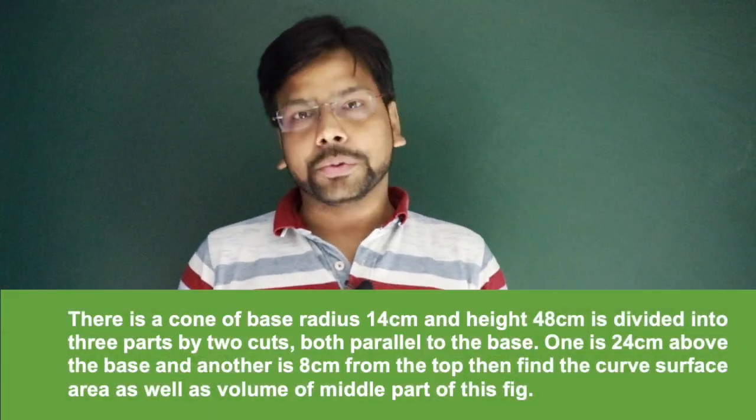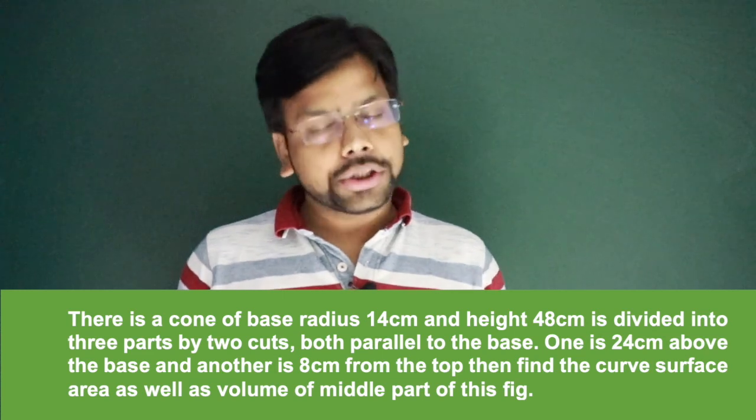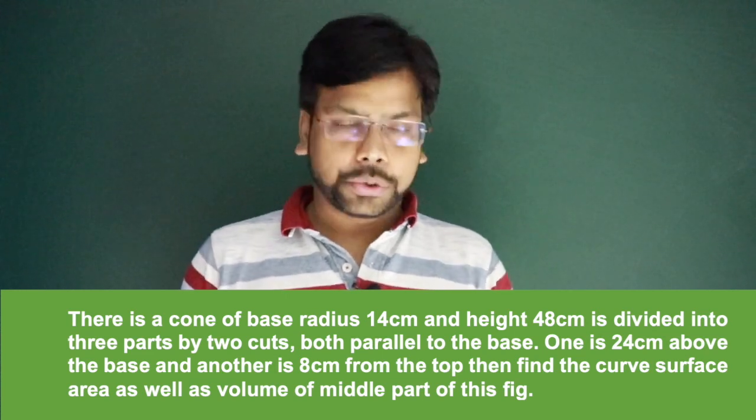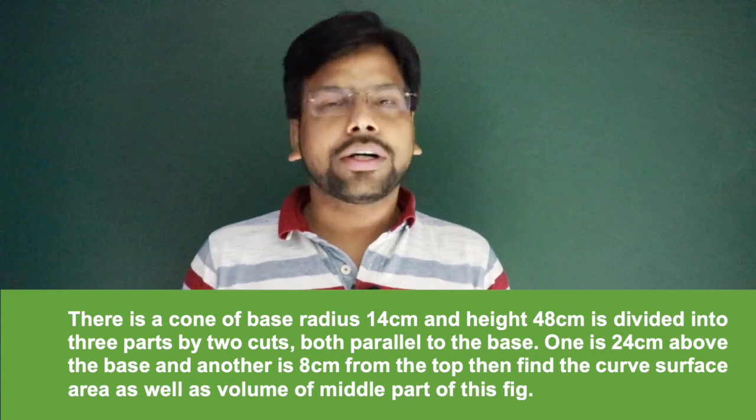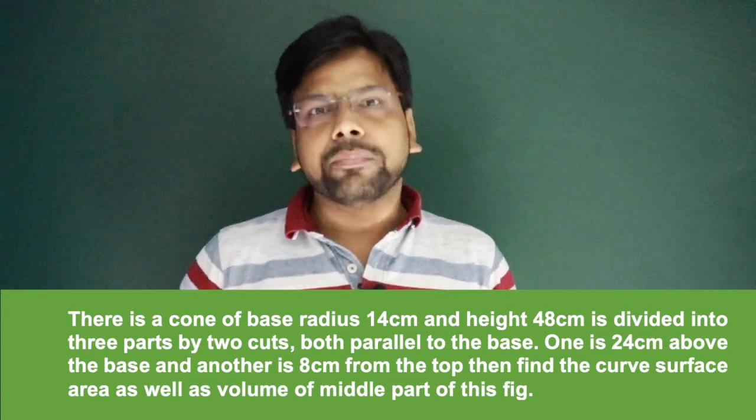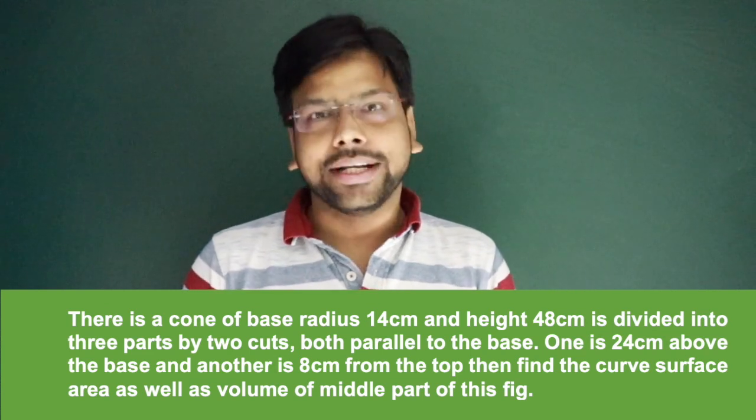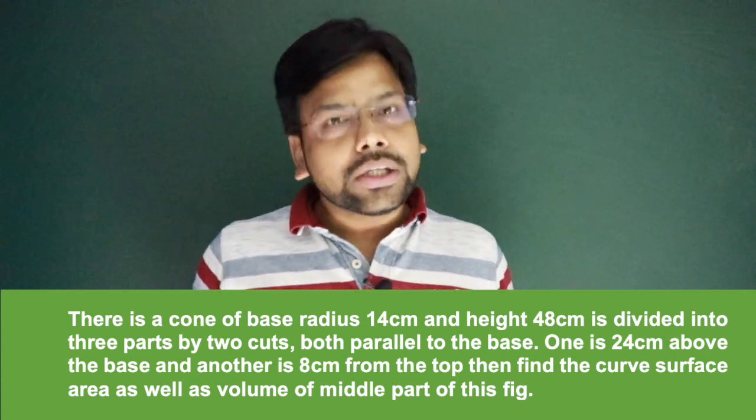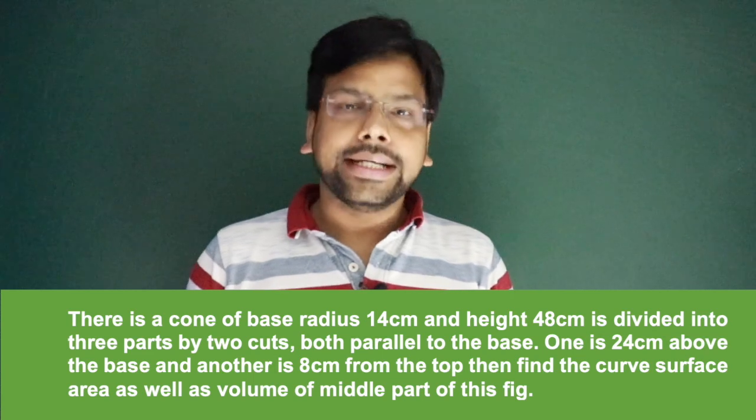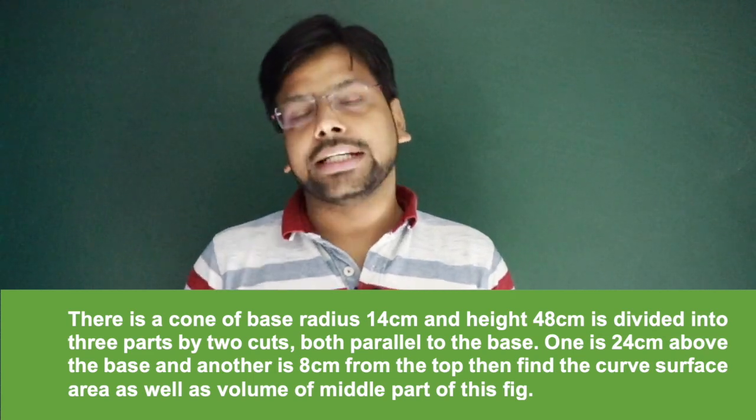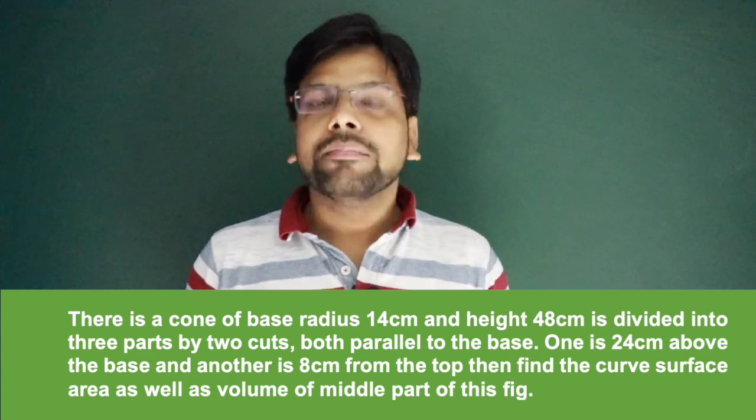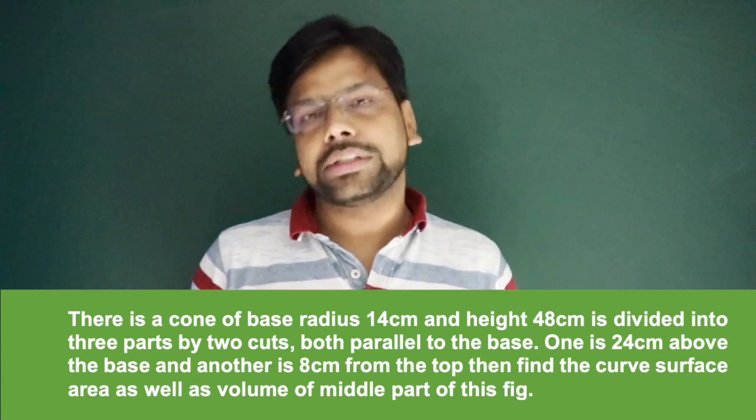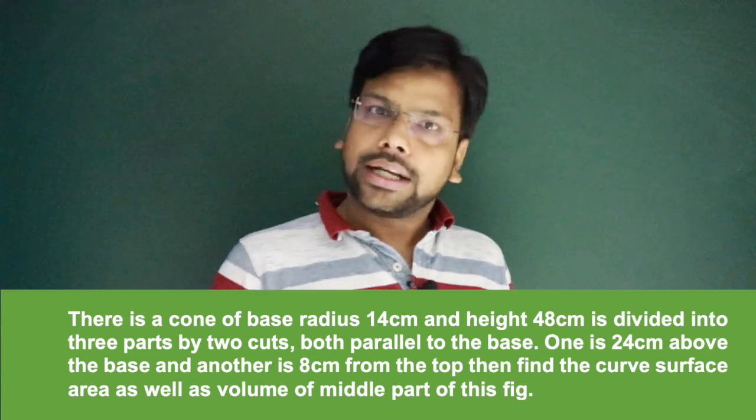Hello friends, welcome again to the world of maths by Amir. There is a question in front of you. I would say please read the question, pause the video and try to solve this question. This is one of the best and classical questions of Thales' theorem in 3D figures. The question is: there's a cone of base radius 14 centimeter and height 48 centimeter, cut by two parallel planes to the base, and we need to find the middle portion's curve surface area and volume.